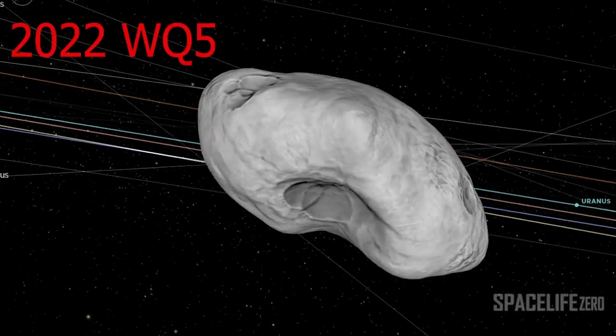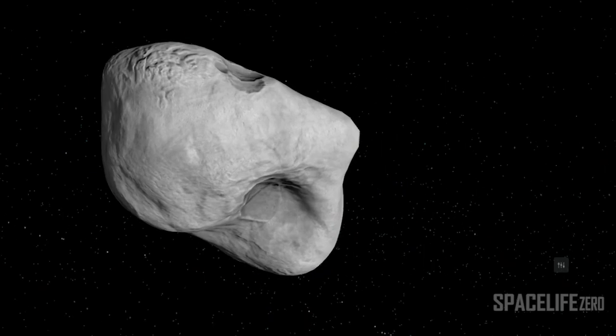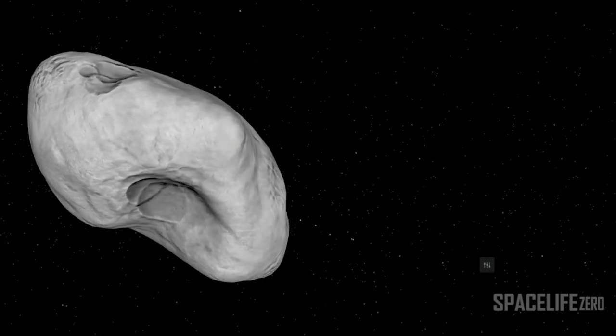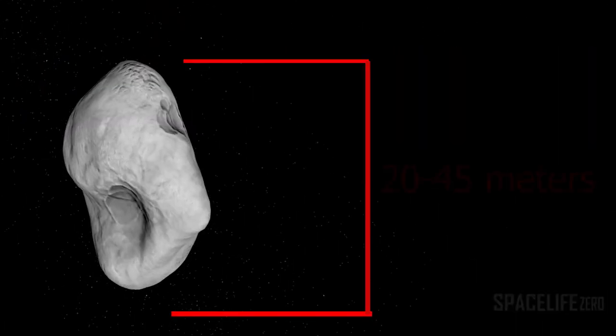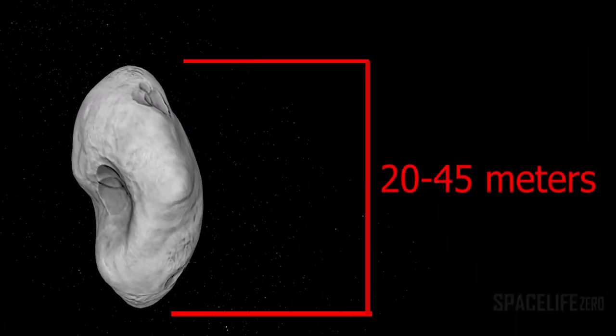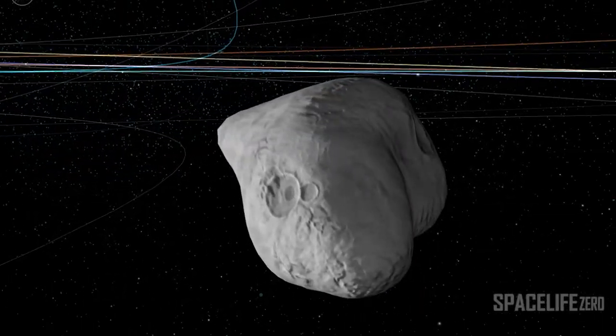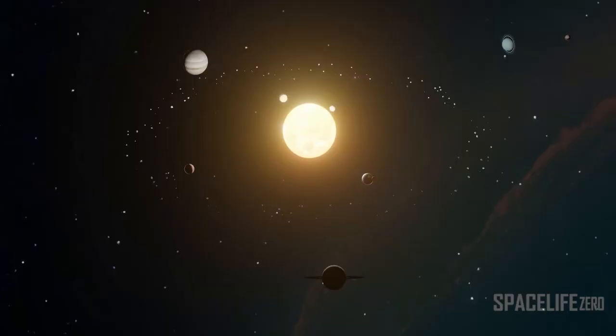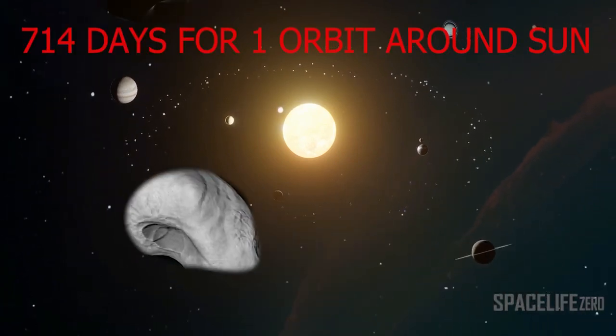Asteroid 2022 WQ5. The asteroid 2022 WQ5 was discovered on November 24, 2022. Its size is estimated in the range from 20 meters to 45 meters. This near-Earth object belongs to the Apollo Group. It makes one orbit around the Sun in 714 days.